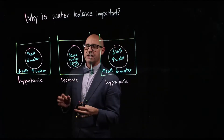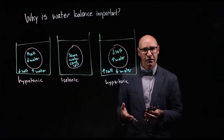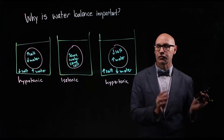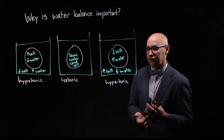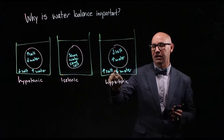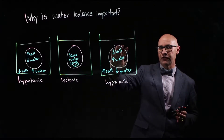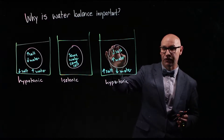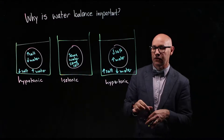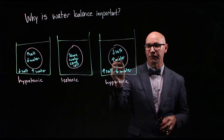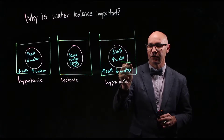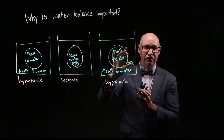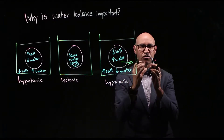Now let's look at the net movement of water. Water moves along a concentration gradient from an area of high water to an area of low water. Where we've got high salt, it means we've got low water. So in the hypertonic scenario, we've got high water inside the cells and low water outside, so there's going to be a net movement of water from the inside to the outside. What's going to happen is the water is going to leave the tissues and the tissue is going to shrivel.